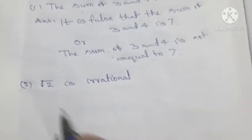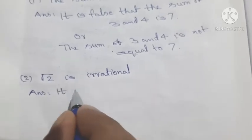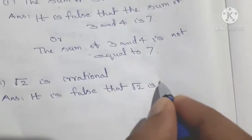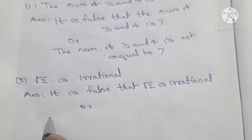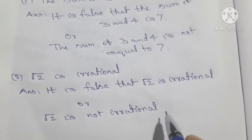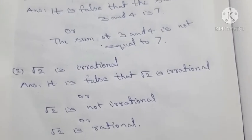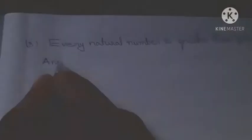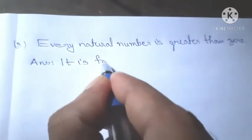Root 2 is irrational. The negation is: it is false that root 2 is not irrational. In other words, it is false that root 2 is not rational.